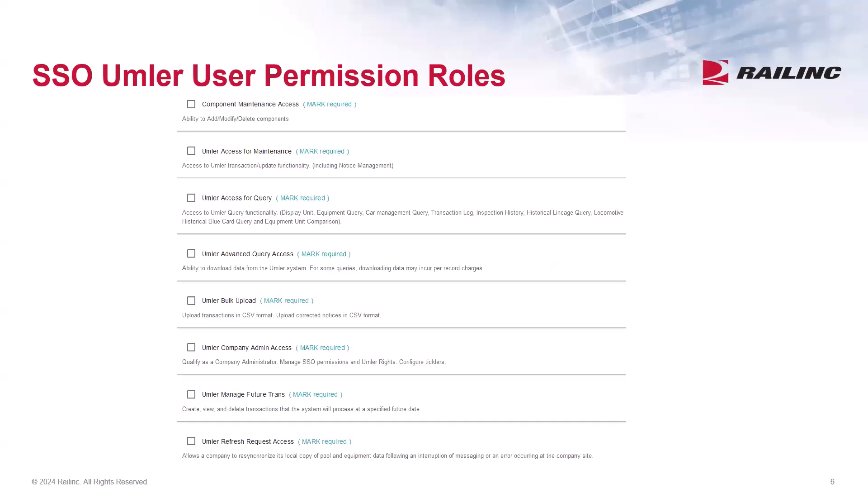Users who have been assigned Umler company admin access will inherit the authority to accept or reject permission requests and grant users access rights for a given company. When users request access to the Umler system, they will choose from a number of permissions that are available. We will review the common user roles needed and how to approve the requests and grant access rights to those users who will need to perform equipment maintenance in Umler.